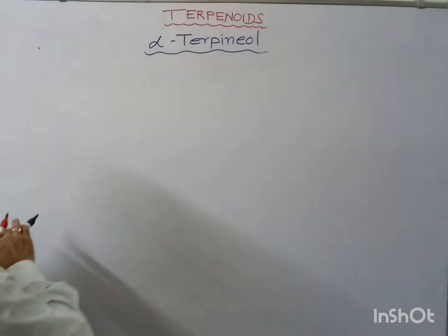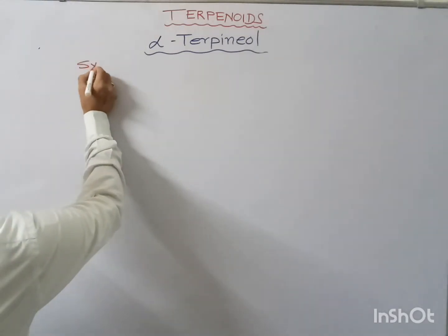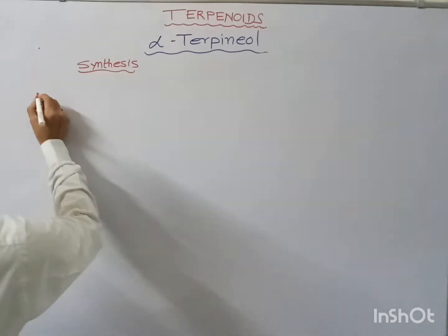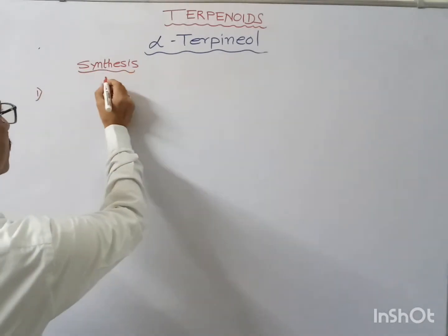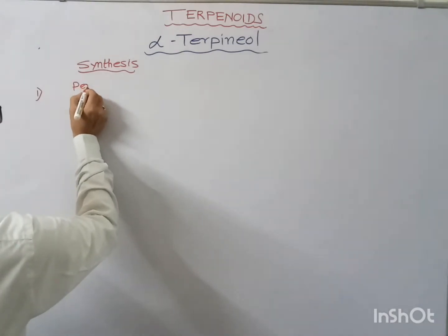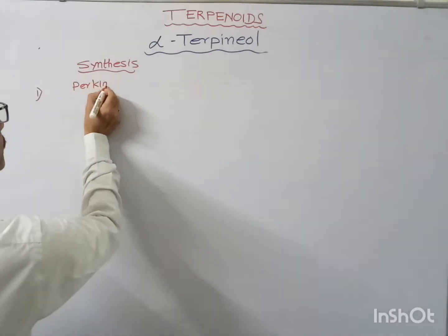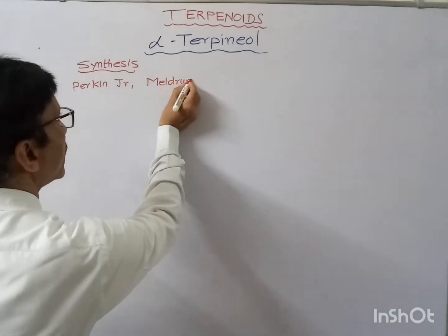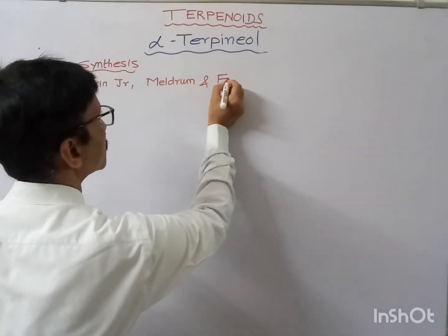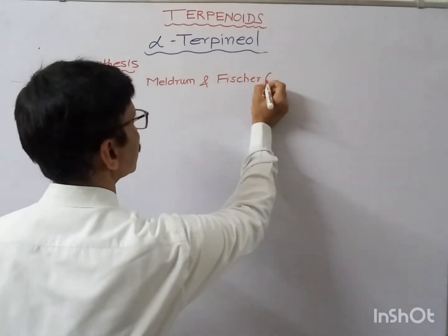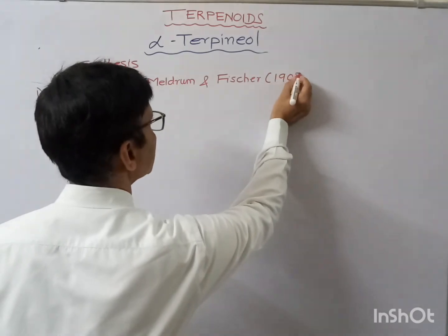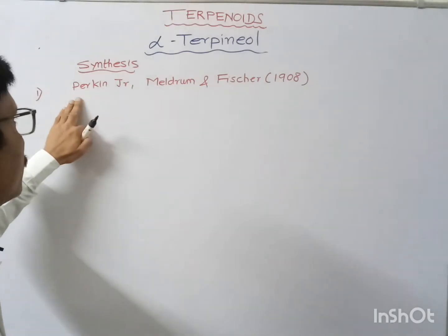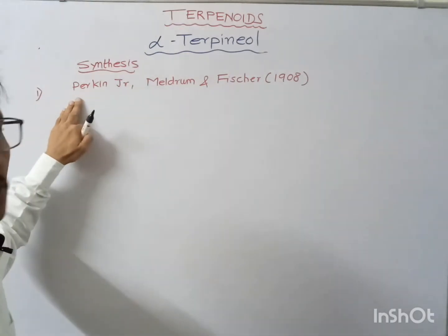There are two syntheses. The first synthesis was given by Perkin Jr., Meldrum, and Fisher, and it was given in 1908. For this synthesis, let's look at the reactant molecule that was taken.